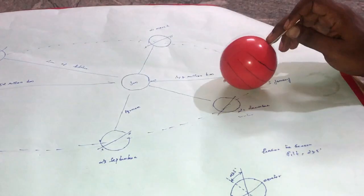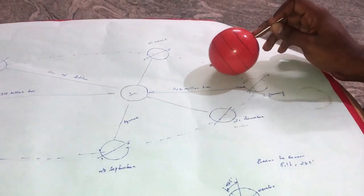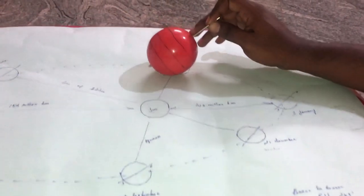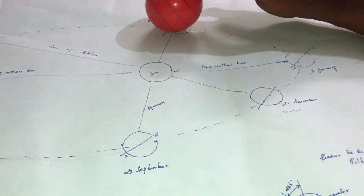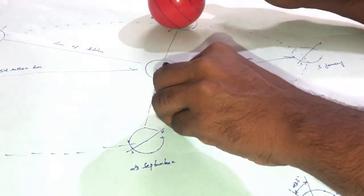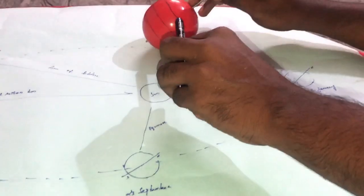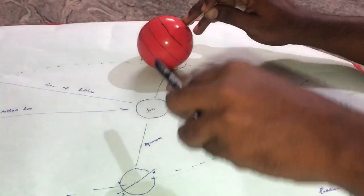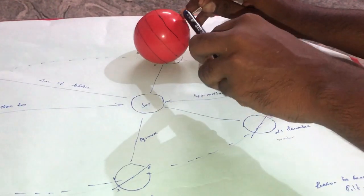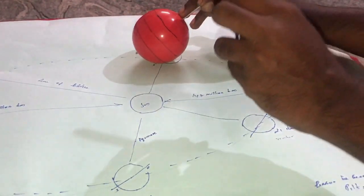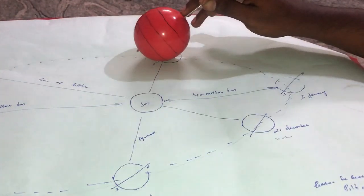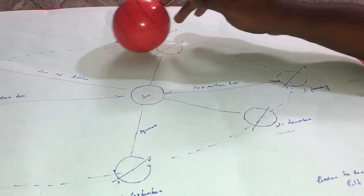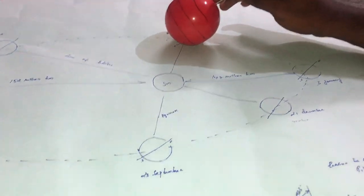Moving towards 21st of March, the sun will be visible to both north pole and south pole equally. This is again an equinox — you can expect 12 hours of day and 12 hours of night. This is the basis of summer and winter.